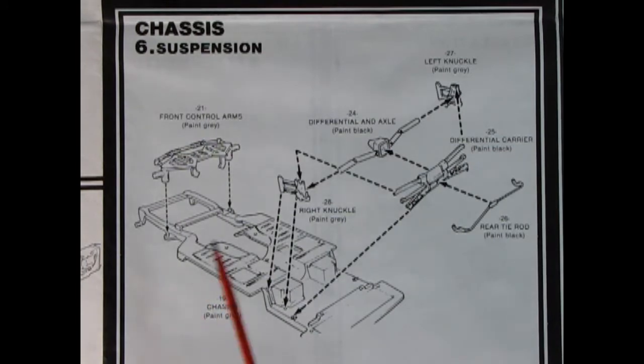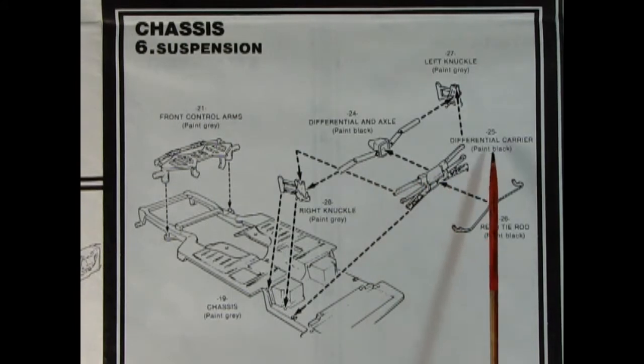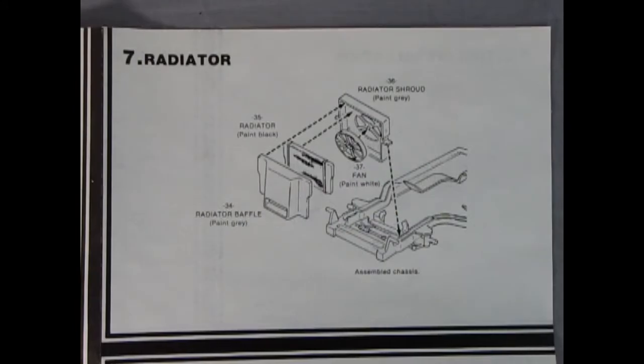Now we get into the chassis and suspension in step number six. Here we've got our front control arms, which it says to paint gray, and our chassis pan underneath. There we've got our right and left knuckle for our differential and axle, as well as the differential carrier and our rear tie rod.